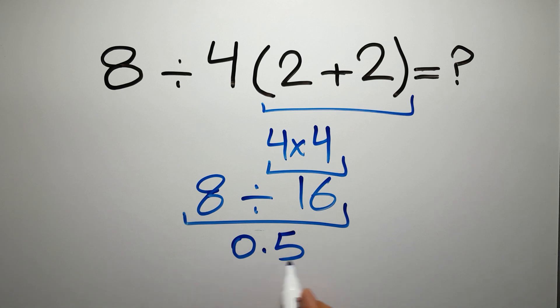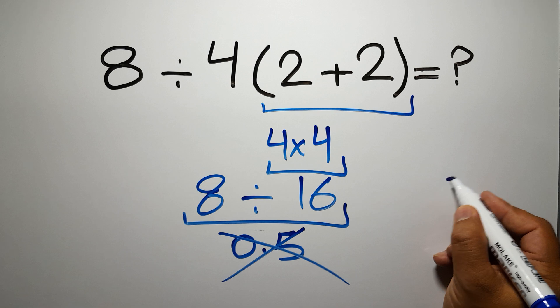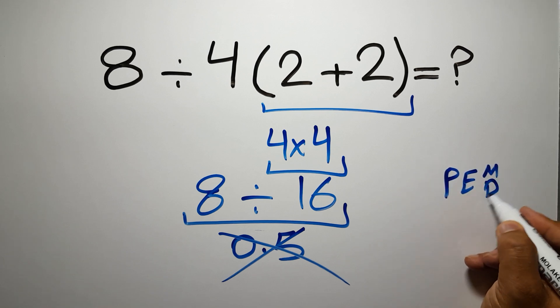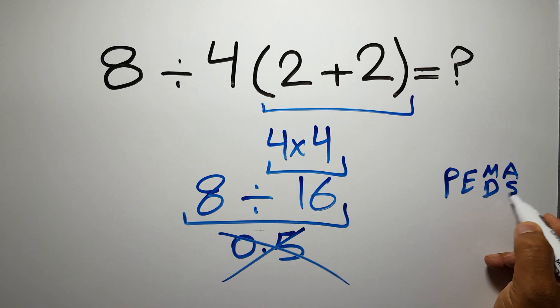But this answer is not correct. Because according to the order of operations, first we have to do parentheses, then exponents, then multiplication or division, and finally addition or subtraction.